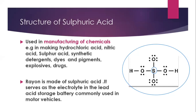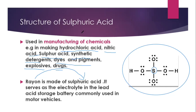Sulfuric Acid is also used in the manufacturing of many important compounds such as Hydrochloric Acid (HCl), Nitric Acid (HNO₃), Sulfurous Acid, Synthetic Detergent, Dyes and Pigments, and Explosives. It is also used in the manufacturing of some drugs. Rayon is also manufactured using Sulfuric Acid, and Sulfuric Acid is commonly used in batteries — that is the reason why it is also called battery acid.